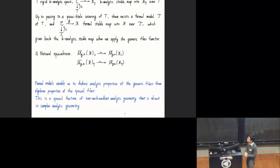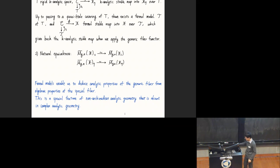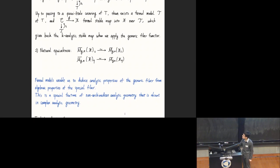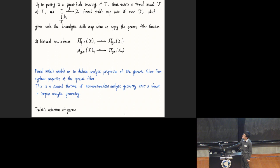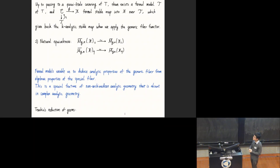Formal models enable us to reduce analytic properties of the generic fiber from algebraic properties of the special fiber. This is really a special feature of non-Archimedean analytic geometry that is absent in complex analytic geometry—it also makes non-Archimedean analytic geometry much closer to algebraic geometry.